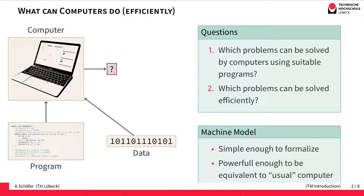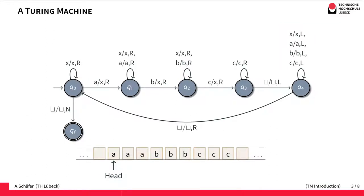To answer these questions we need a formal model. The formal model of the computer should on one hand be simple enough to be formalized — it will be much simpler than the computers we are all using now. But on the other hand it should be powerful enough that everything that can be done with an arbitrary computer can also be done by our formal model, at least in principle. The formal model we are using in this course is a Turing machine.